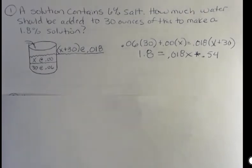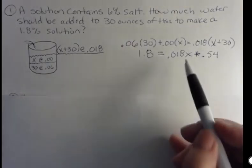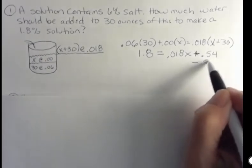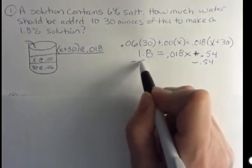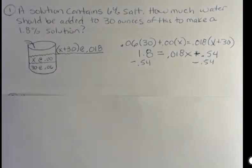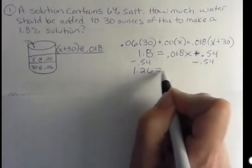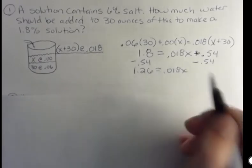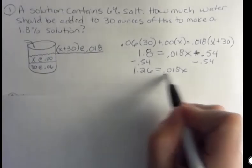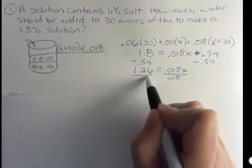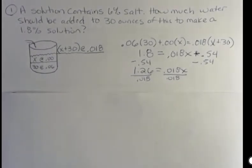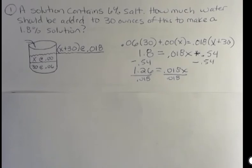Now I want to solve this equation and find out what x is. So I'm going to subtract 0.54 from both sides. That's going to give me 1.8 minus 0.54, and that's 1.26. And then I'm going to just divide both sides by 0.018, and I get 70.